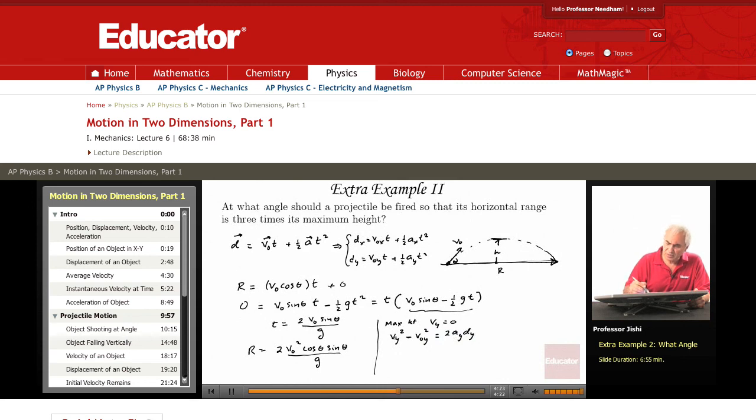VY squared is 0 minus V0Y. V0Y is V0 sine theta. Remember, V0X is V0 cos theta and V0Y is V0 sine theta.